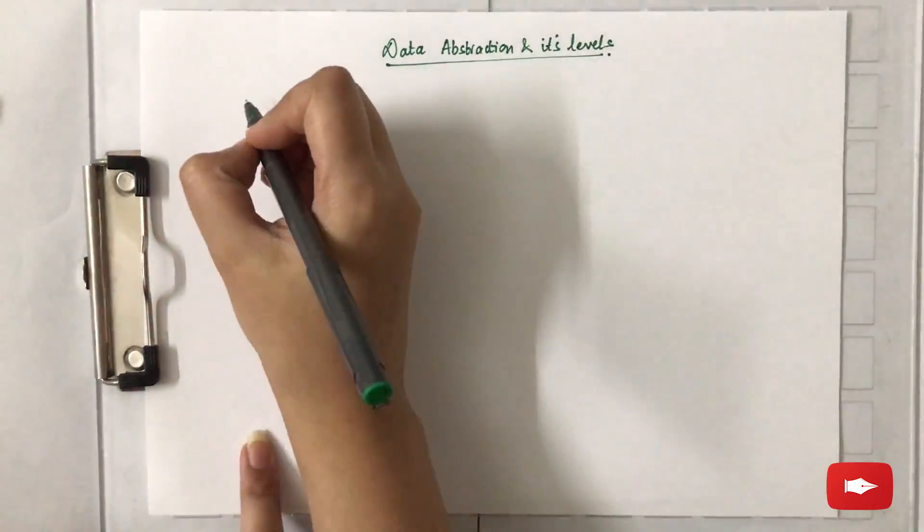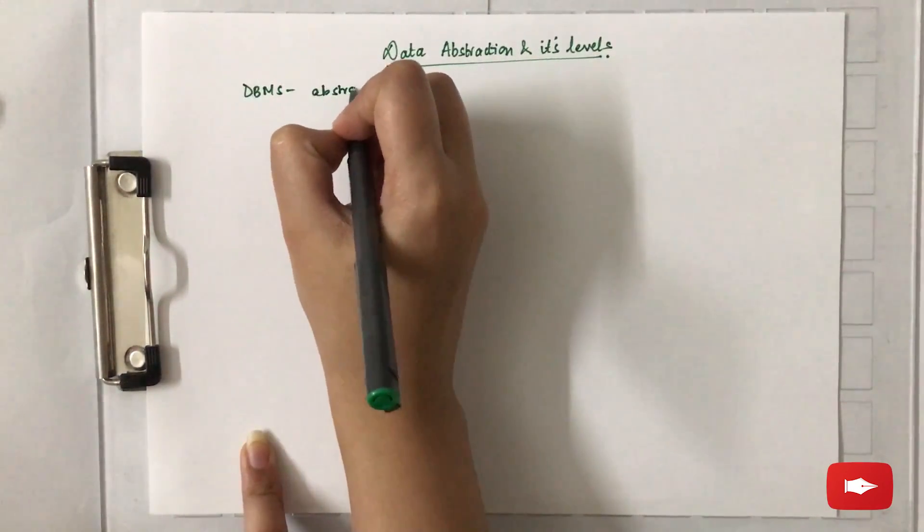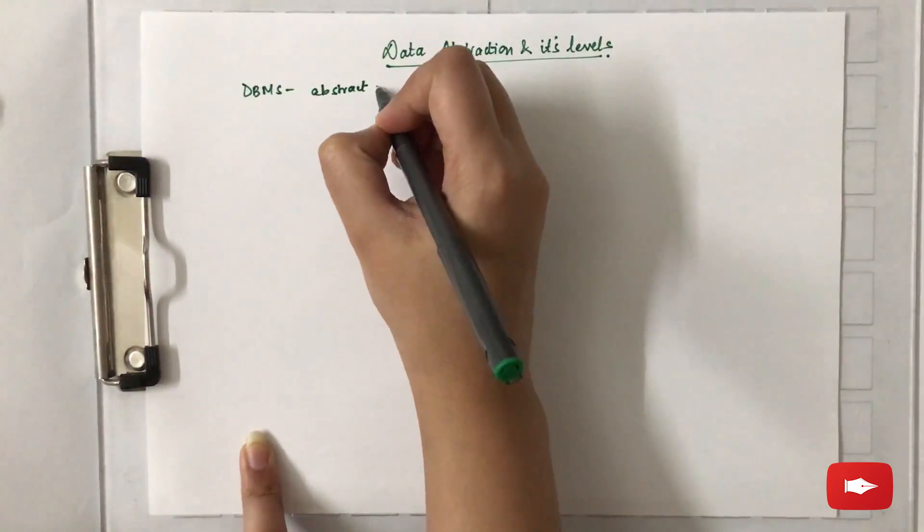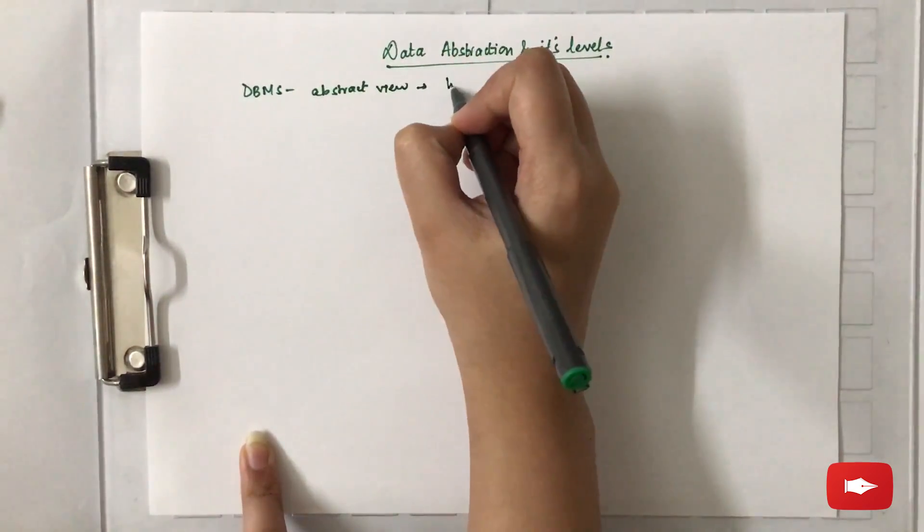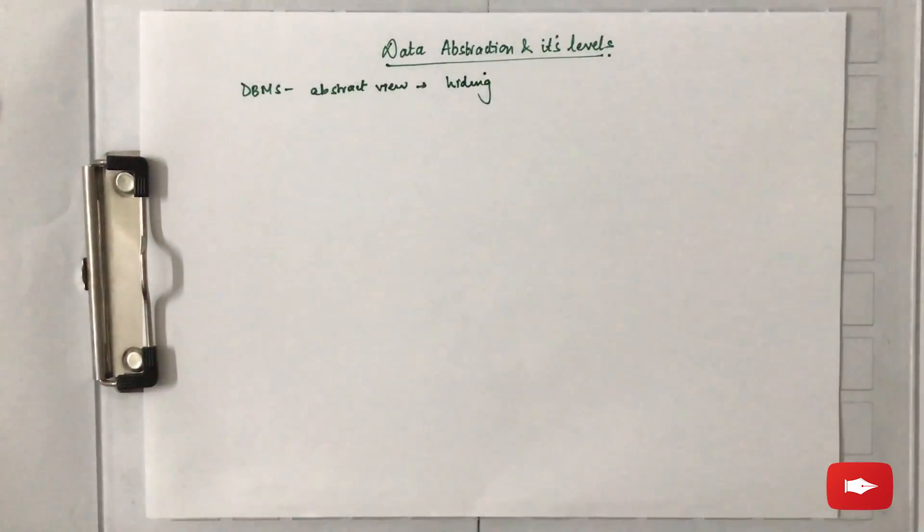The topic for this video is data abstraction and its levels. The DBMS gives an abstract view of data. When we talk about abstract view, that is data abstraction, it means data hiding. The DBMS hides details of how the data is stored and maintained.